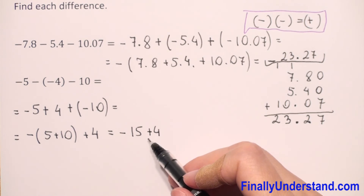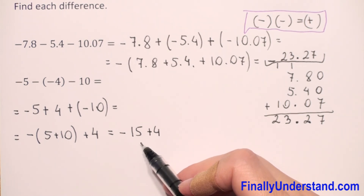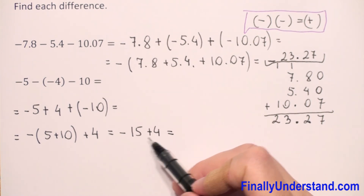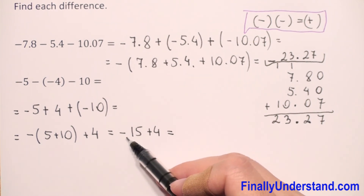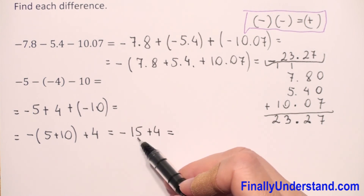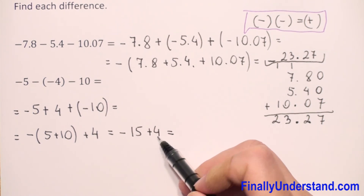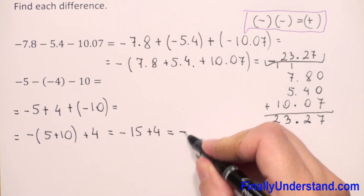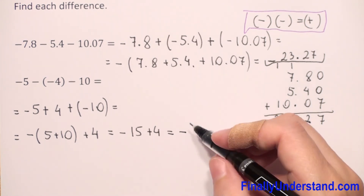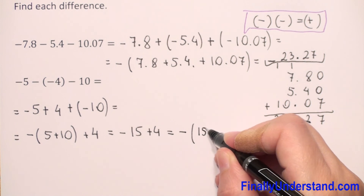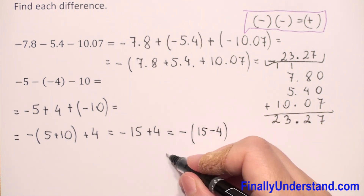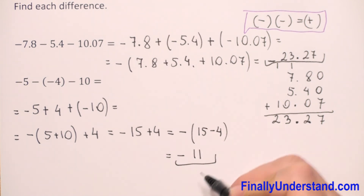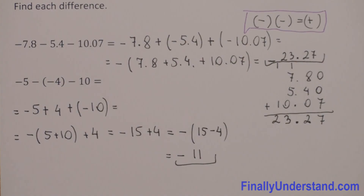Negative five plus negative ten is negative fifteen. Now we have negative fifteen plus positive four. We check which number is greater — fifteen is greater than four — so we copy the negative sign from the greater number and subtract: fifteen minus four is eleven. The final answer is negative eleven.